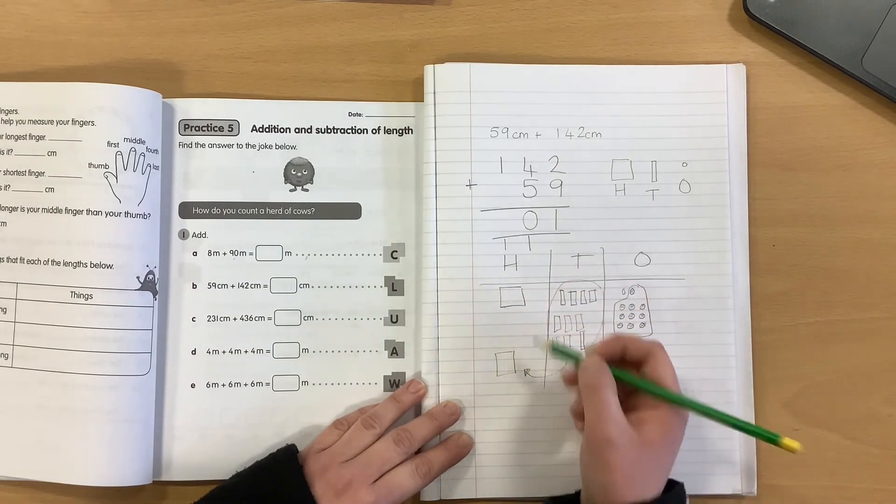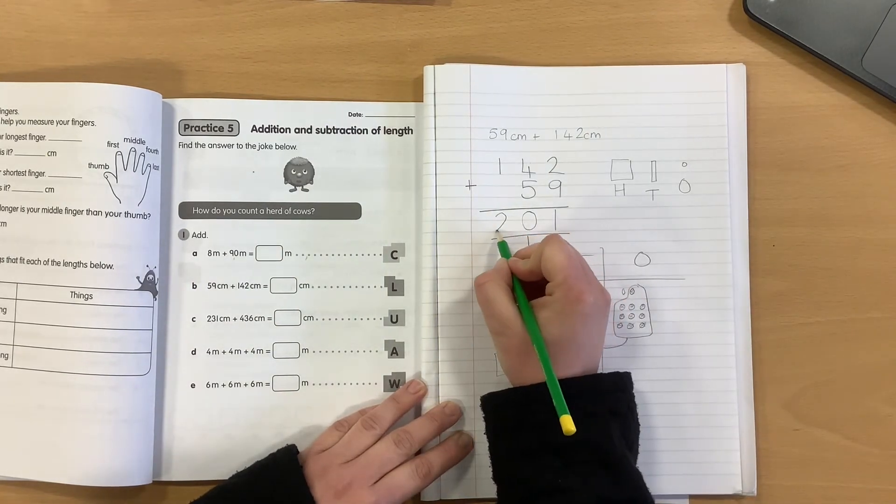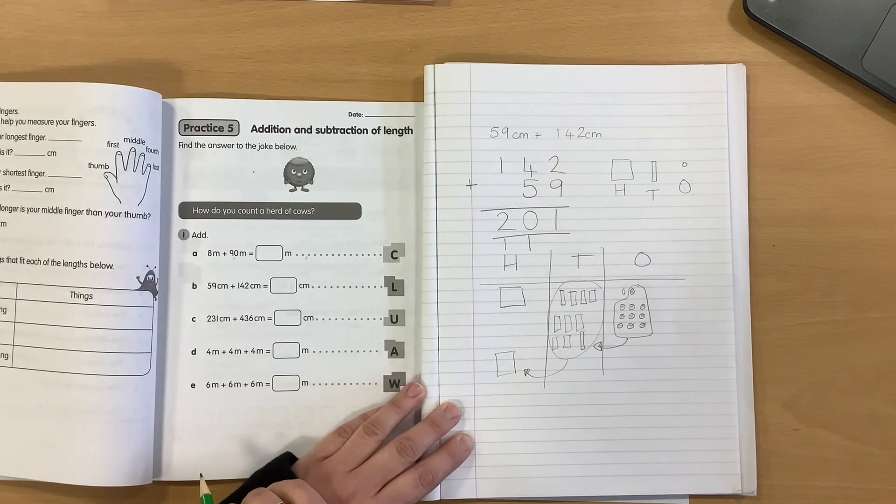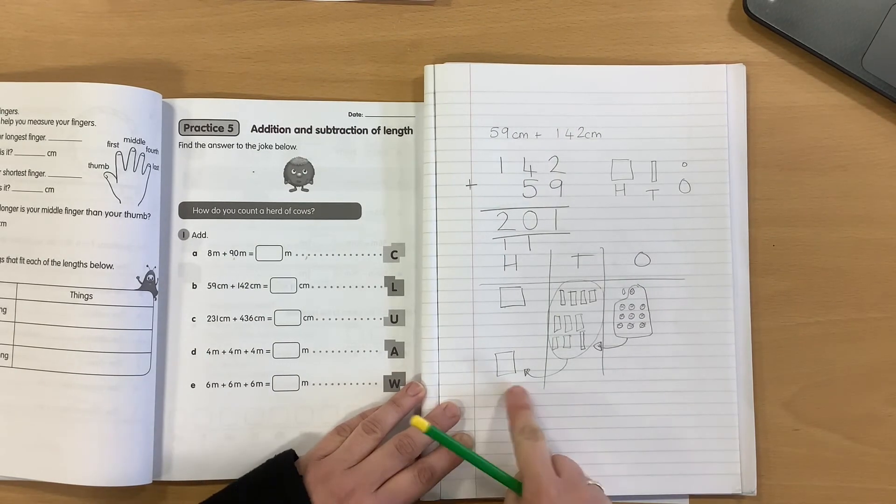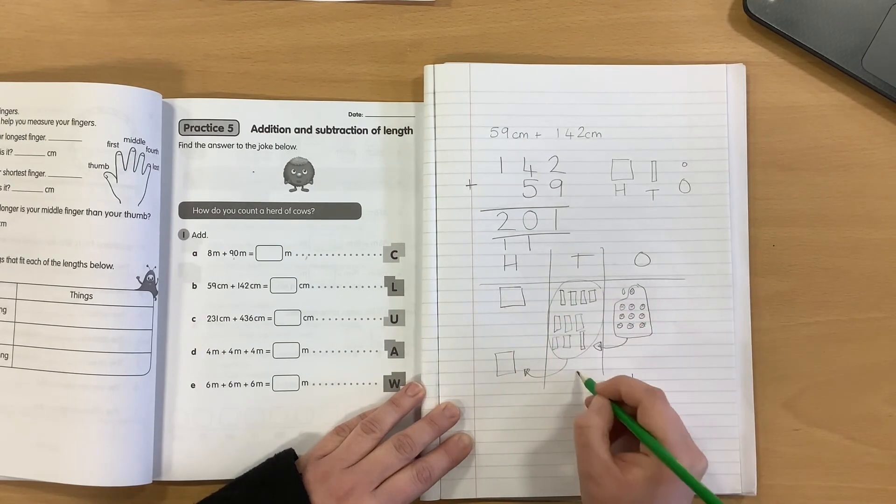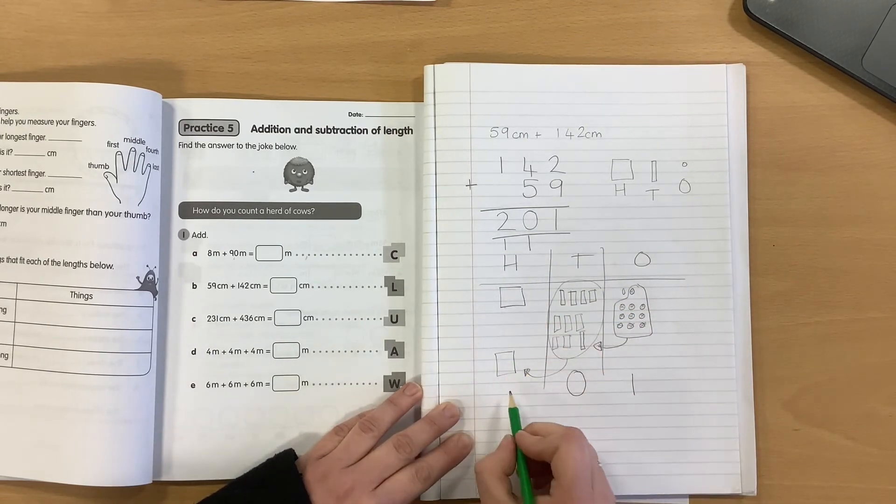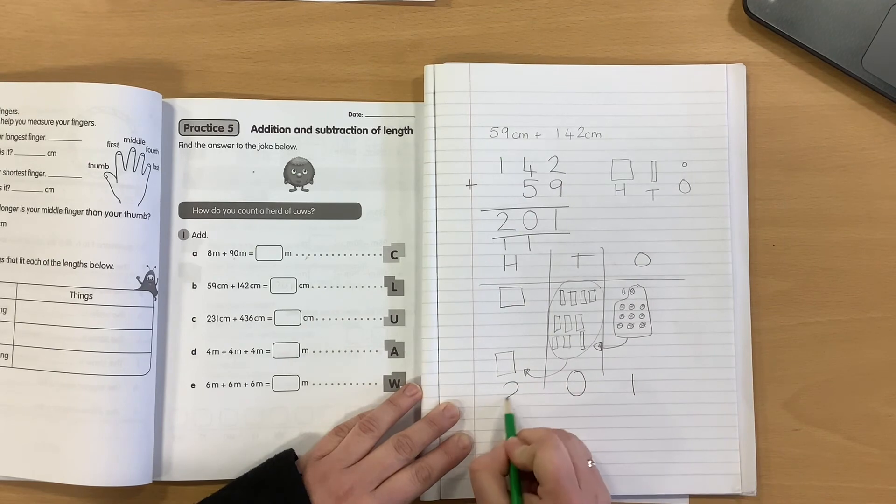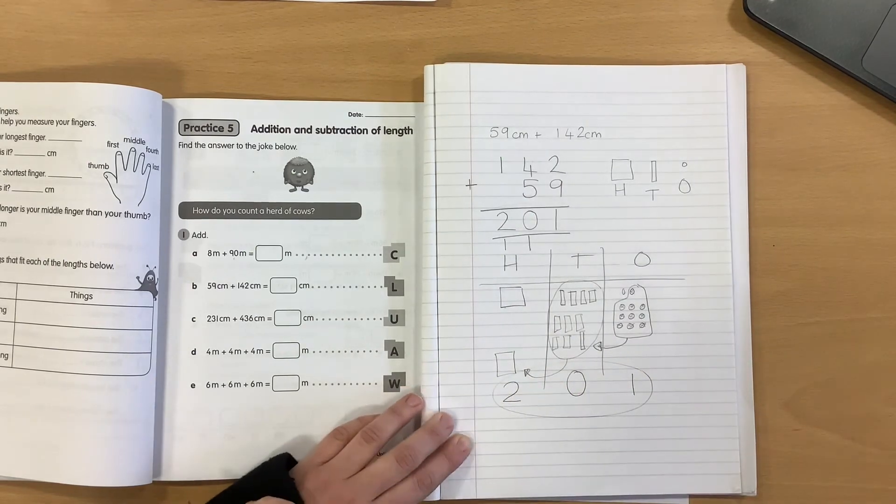My last step is to count my hundreds. One, two, and I have two hundreds. A good way of checking as well is to write the digits into the columns of how many you've got left. So, I've got one one left. I have no tens, and I have two hundreds. So, I have the number two hundred and one.